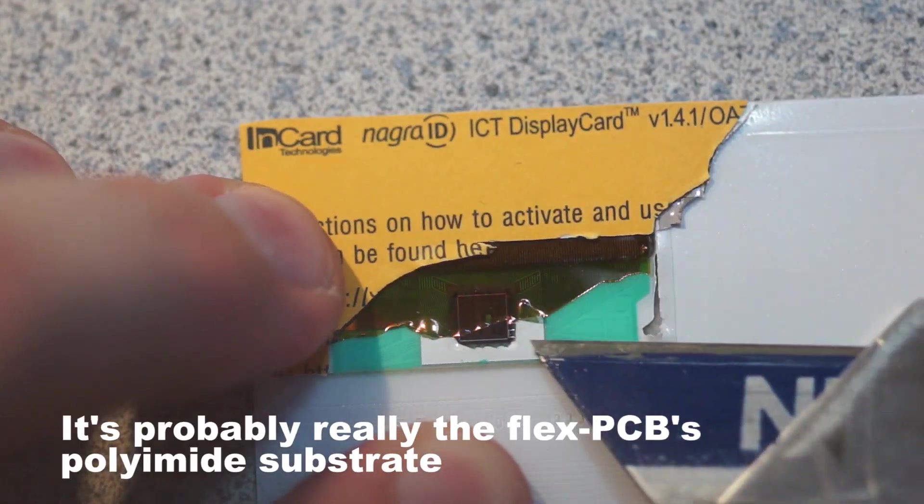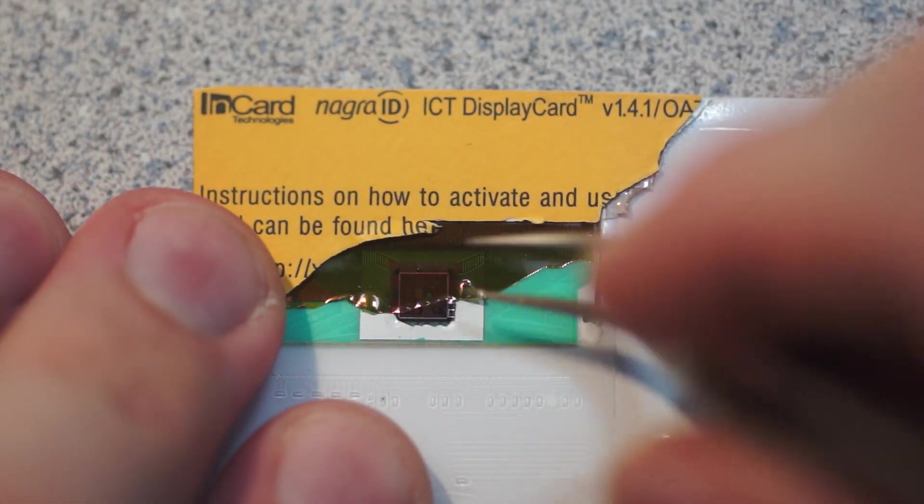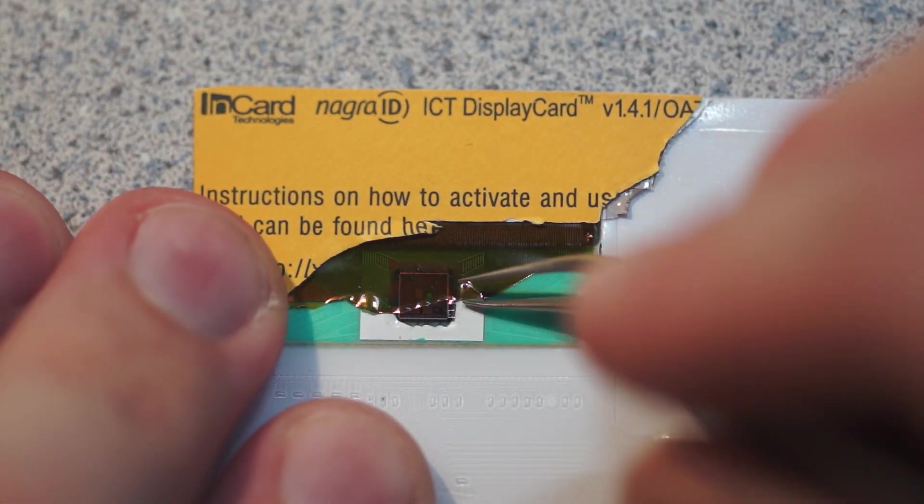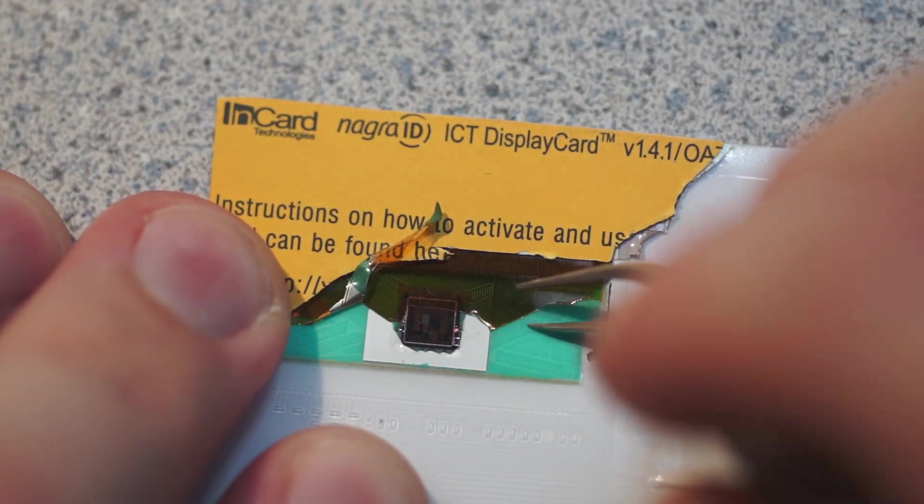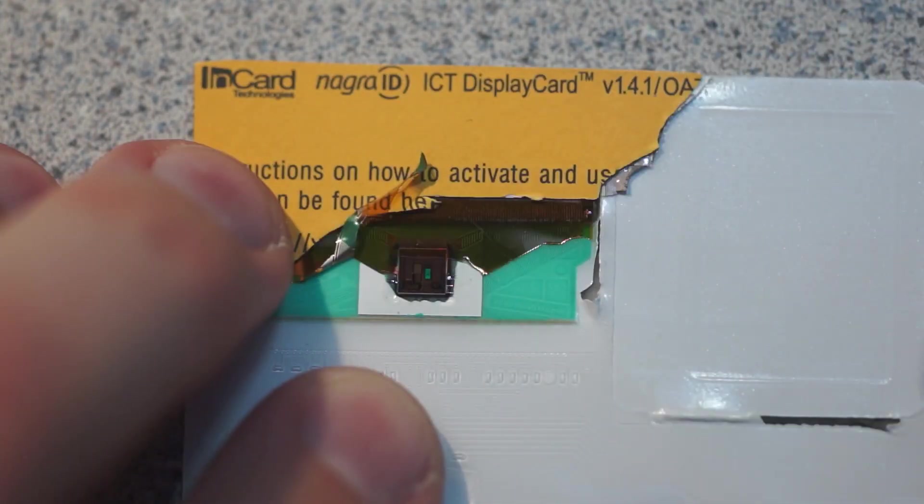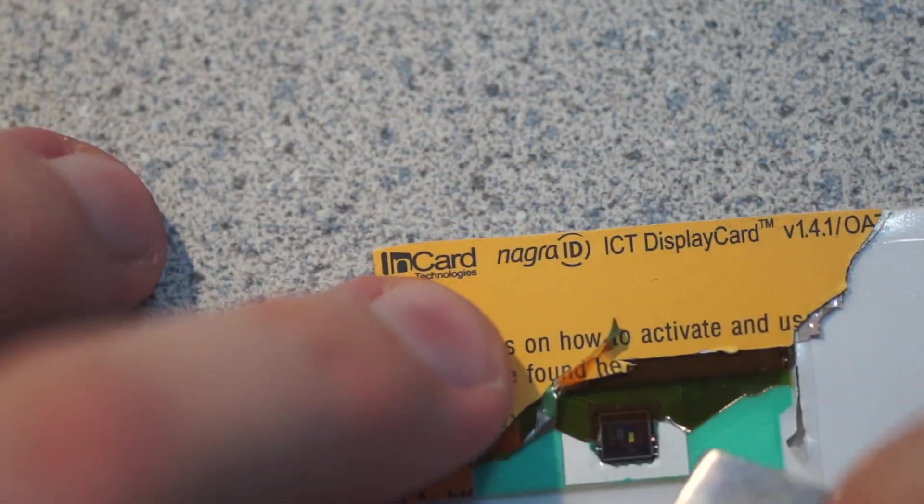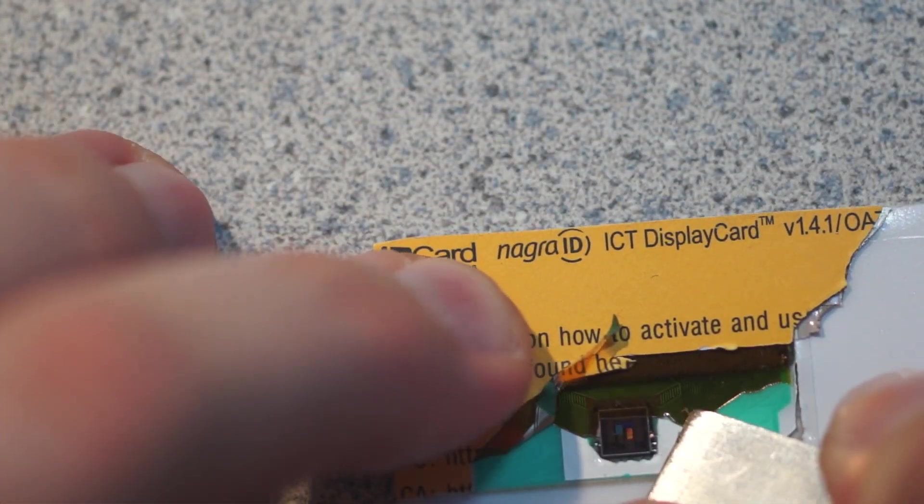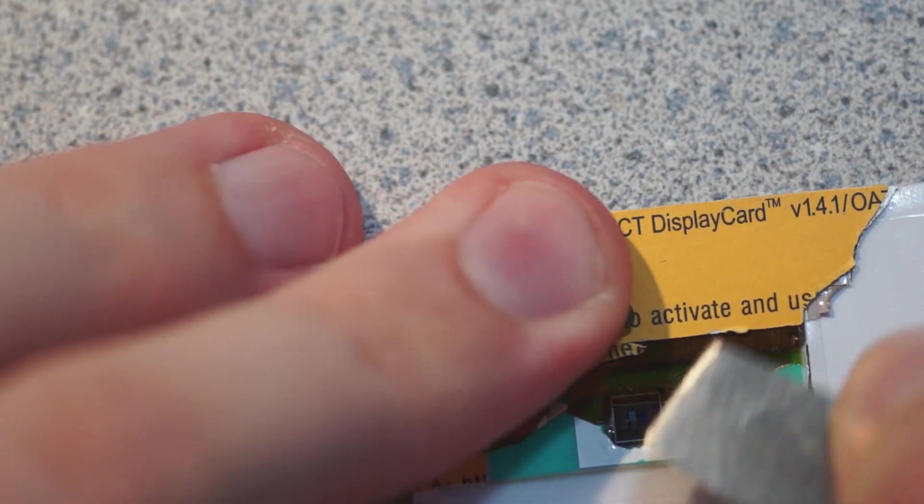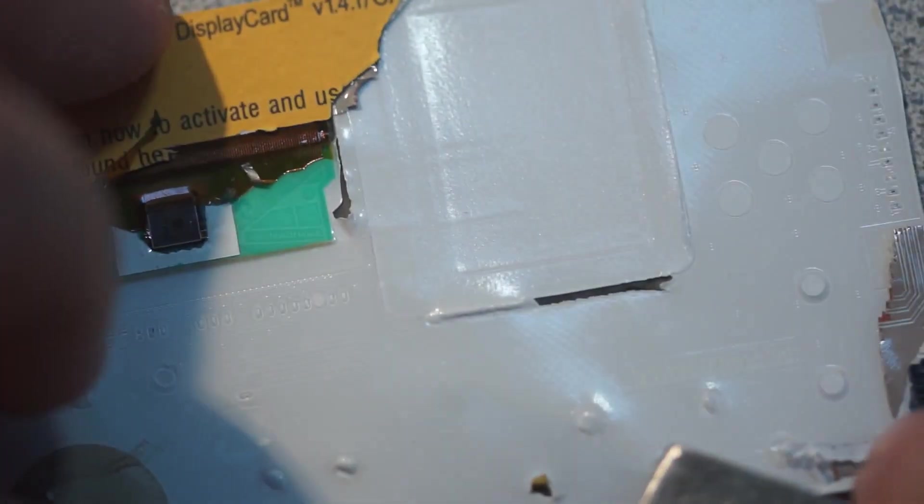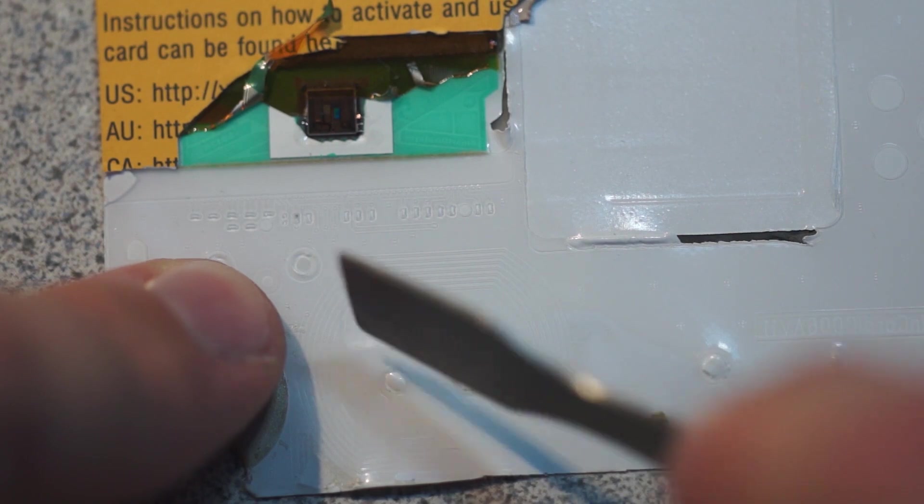Just have it in what looks like Kapton tape, that would surprise me. I think this is a PCB substrate - the flexible PCB, I forget what the brand is - the film PCB substrate, because it's definitely got wires on it. There is one IC. I don't know if that's the only IC.